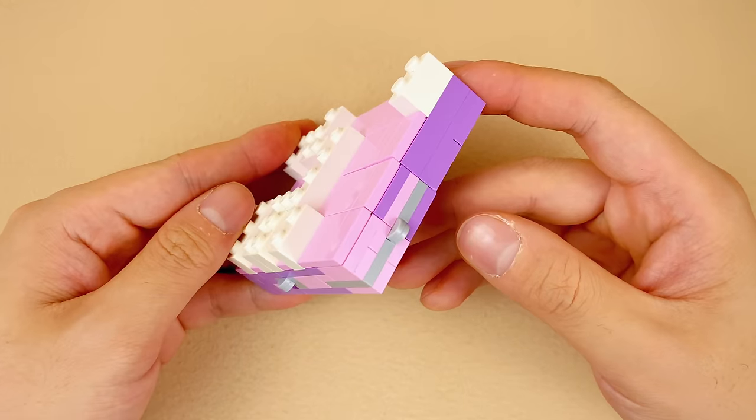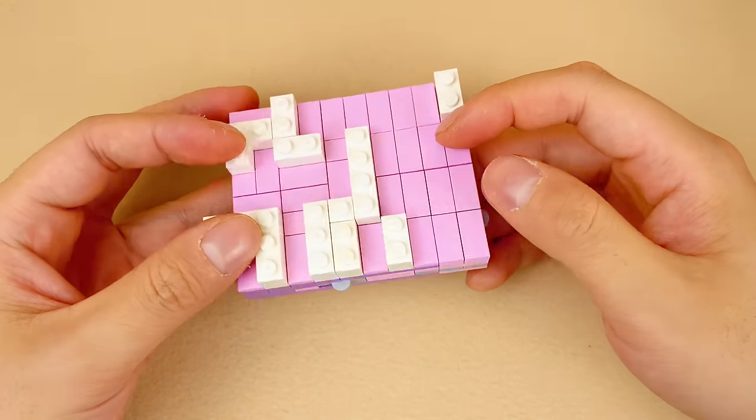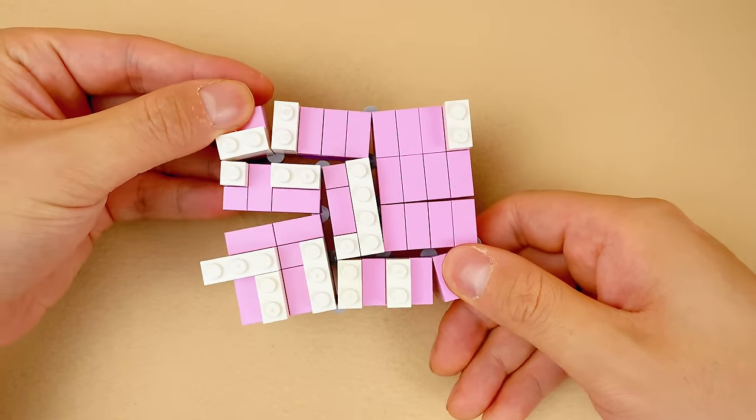But if you take the diagonal points of the plate, and make a tweak, you will find three letters at once.